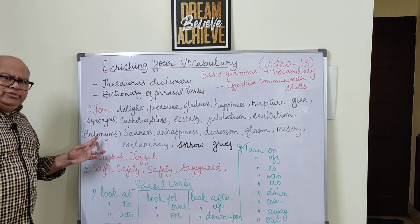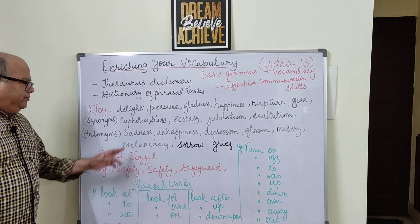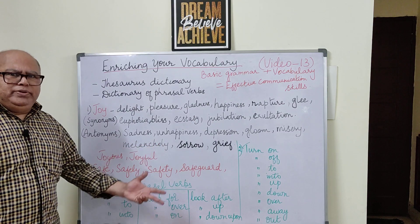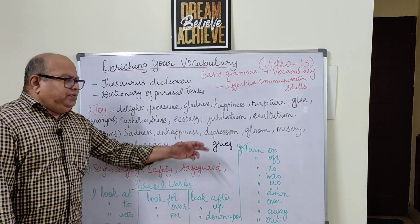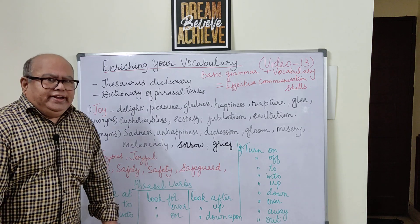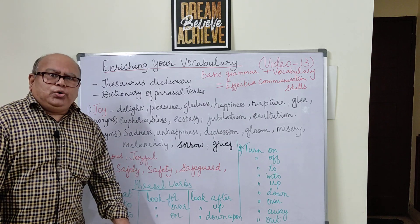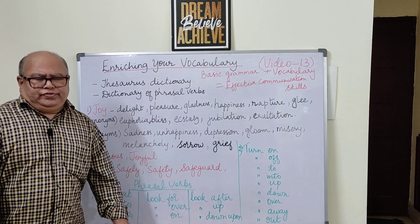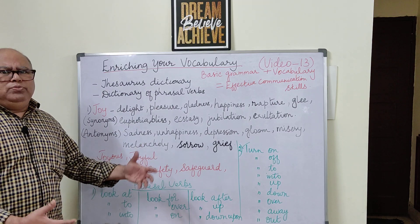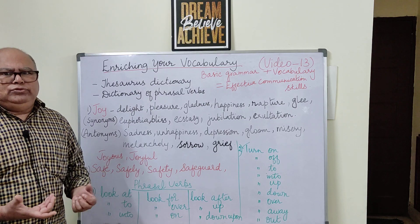Now look at the antonyms — the opposites of the word 'joy': sadness, unhappiness, depression, gloom, misery, melancholy, sorrow, and grief. When you know more and more such expressions, it improves your fluency in the language. This is what the thesaurus dictionary deals with — you should have one, or at least buy many books to read.